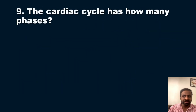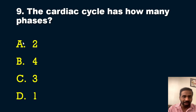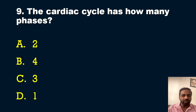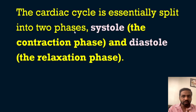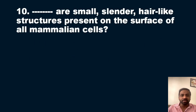The ninth question is from the cardiovascular system: The cardiac cycle has how many phases? Options: A) 2, B) 4, C) 3, D) 1. The answer is option A — 2 phases. The cardiac cycle is divided into systole (contraction phase) and diastole (relaxation phase). A simple but potentially confusing question.